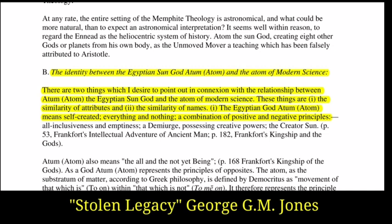The identity between the Egyptian sun god Atum, or atom, and the atom of modern science. There are two things to point out in connection with the relationship between Atum the Egyptian sun god and the atom of modern science: one, the similarity of attributes; and two, the similarity of names. The Egyptian god Atum means 'self-created' — everything and nothing, a combination of positive and negative principles. From the book Stolen Legacy by George G.M. Jones.